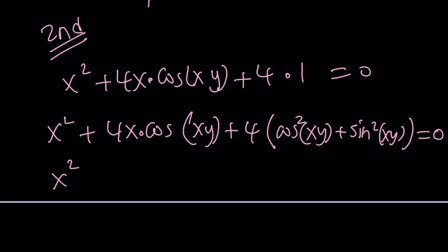I can write this as x squared plus 4x times cosine of xy squared. And then plus 4 times sine of xy squared. Great.